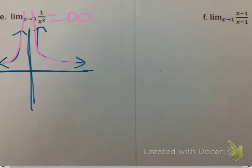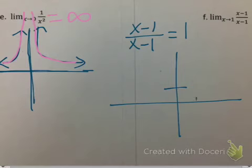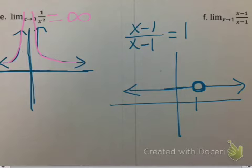Next: the limit as x approaches 1 of (x-1)/(x-1). This really just becomes 1, since they cancel. So this graph is actually just the horizontal line y=1, except at x=1 it's not defined — there's a hole there (when a factor cancels, there's a hole). As I approach 1 from both the right and the left, I'm getting closer and closer to 1. My answer is 1, even though it's a hole — it does not have to be defined.